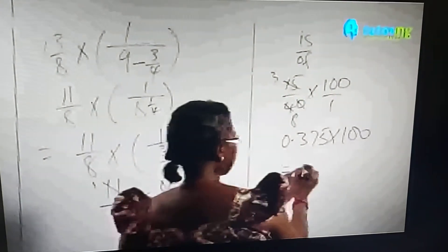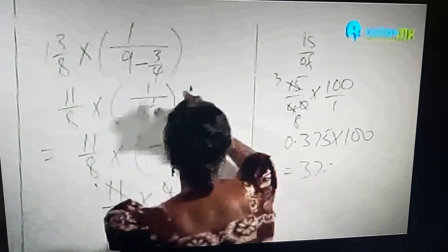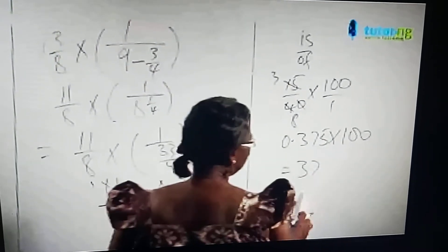Which will give us 37.5, or 37 and a half. Please don't use the point.